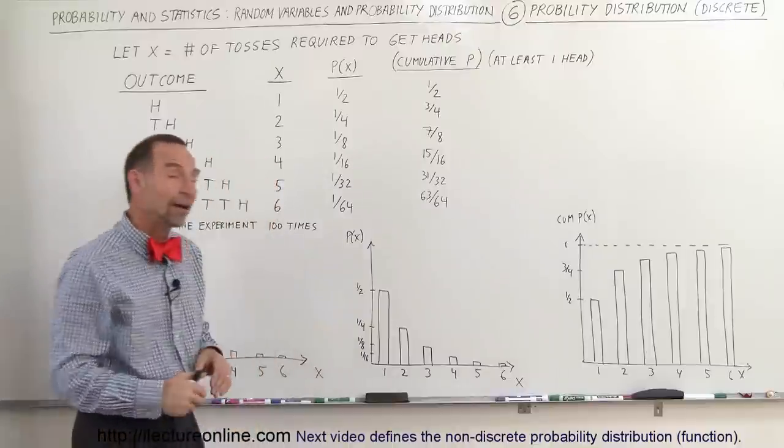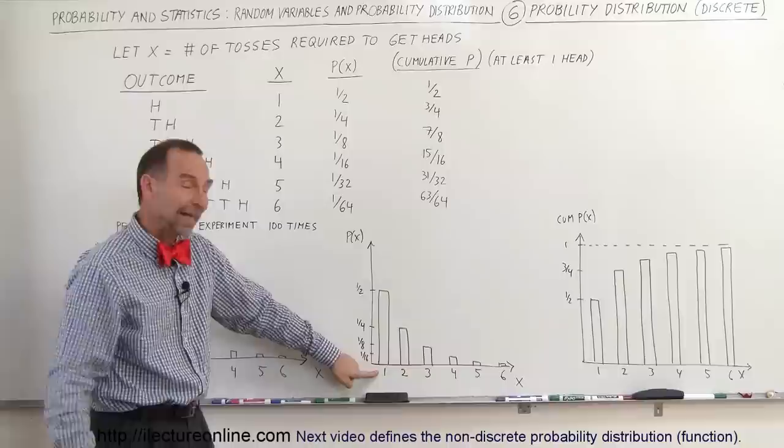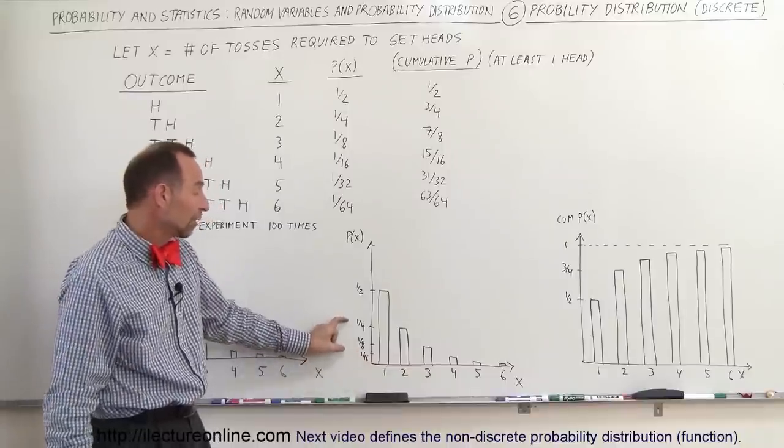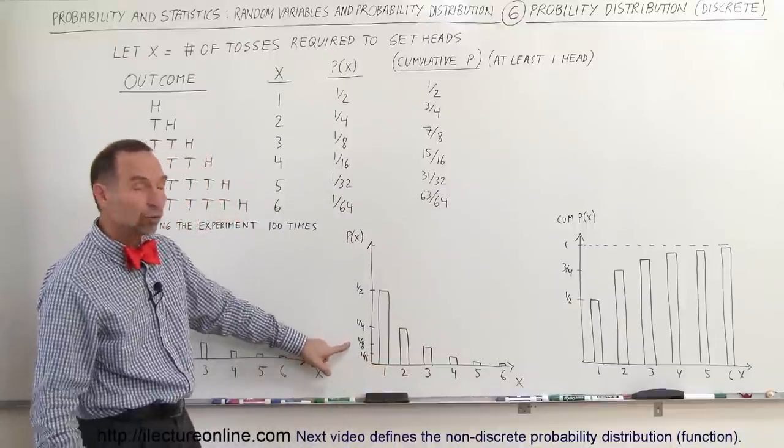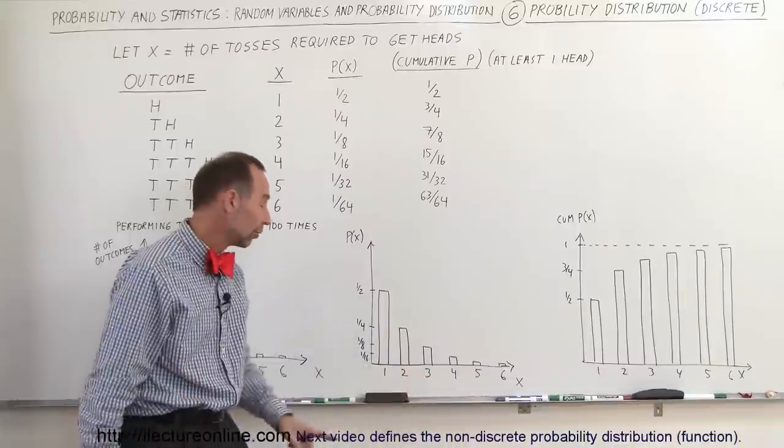Looking back at this graph, the probability distribution function shows that there's a 50-50 chance x will be 1, meaning you'll get heads on the first try. There's a 25% chance, 1 out of 4, that heads will appear on the second try. There's 1 eighth, or 12 and a half percent chance, that x will be 3, meaning heads will appear on the third time.